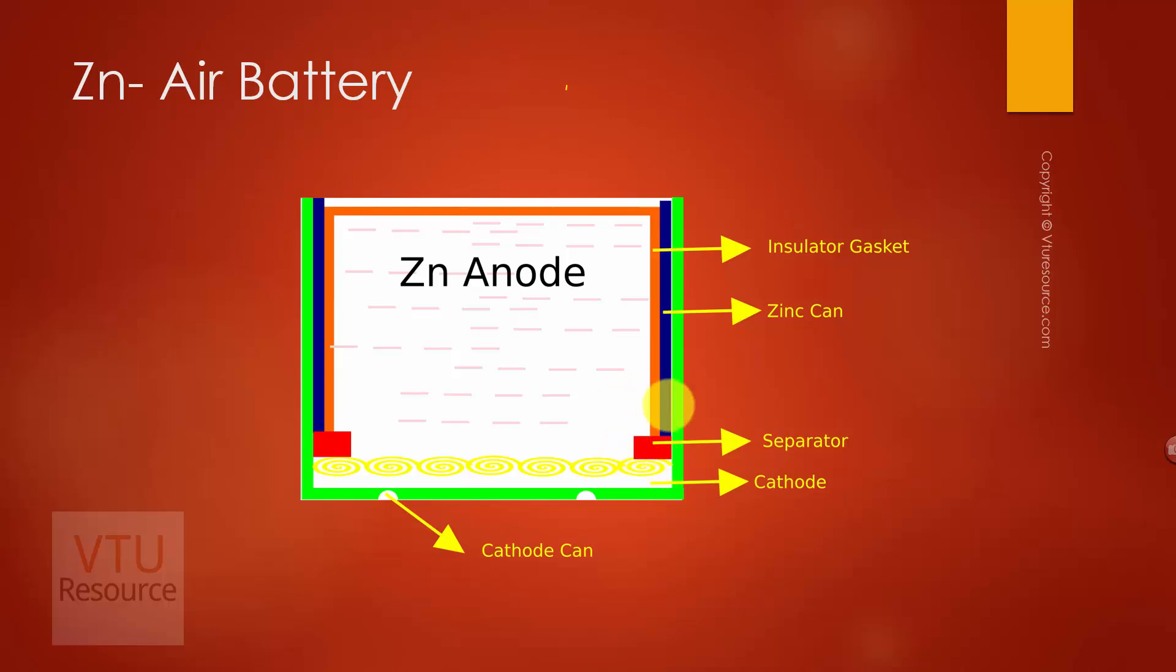In zinc air battery, the cathode is made up of porous plate of carbon and here the cathode is activated by manganese oxide. Anode here is made up of rectangular pellets of zinc and the anode is enclosed between the two cathode plates.